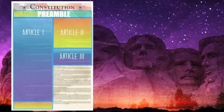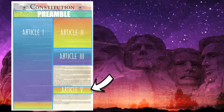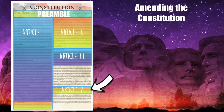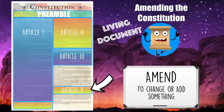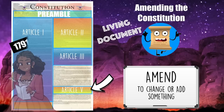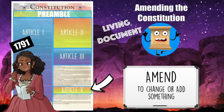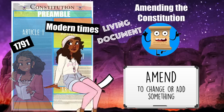We made it through all three branches. Let's finish strong here with Article 5. Article 5 of the Constitution is a short one, but it tells us how to amend the Constitution. You've probably heard this before — the Constitution is a living document, which really just means it can change or adapt to the times. Remember, in 1791 when this is ratified, slavery was still legal, Native Americans weren't considered citizens, and women couldn't vote. It is a very good thing Article 5 exists so that we can make changes and adapt to the times.